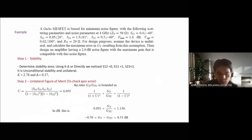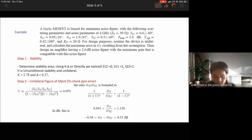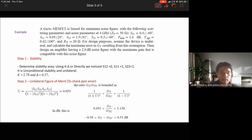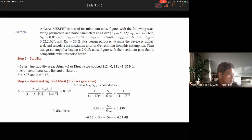Let's see an example for the design of a low noise amplifier. The transistor is biased for minimum noise figure with the following scattering parameters and noise figure at 4 GHz. All S-parameter values are given. The minimum noise figure is 1.6 dB, gamma_optimum is 0.62 at an angle of 100 degrees.